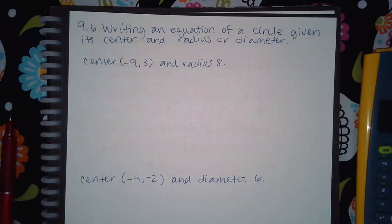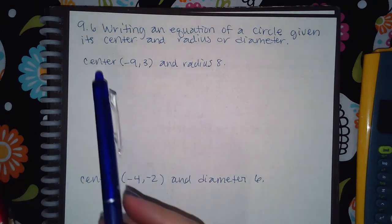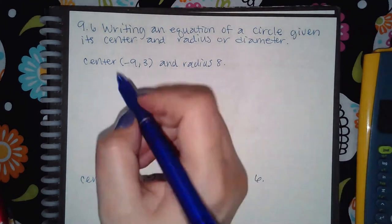Here we have writing an equation of a circle given its center and radius or diameter. This one is different - it tells me that the center is this and the radius is this, so I can go straight into my formula.